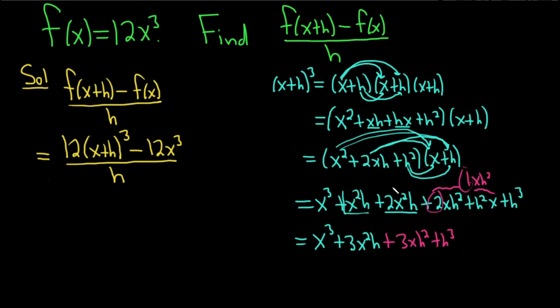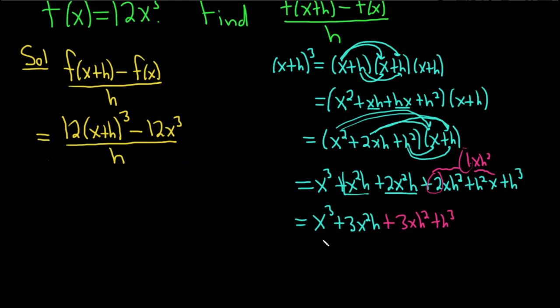Okay. So now we can go back and take this and plug it in here. So this is equal to good stuff. So we have 12 parentheses x cubed plus 3x squared h plus 3xh squared plus h cubed. And this is minus 12x cubed, all being divided by h.